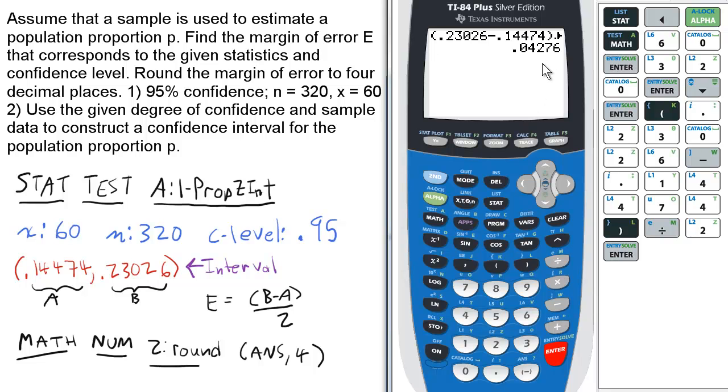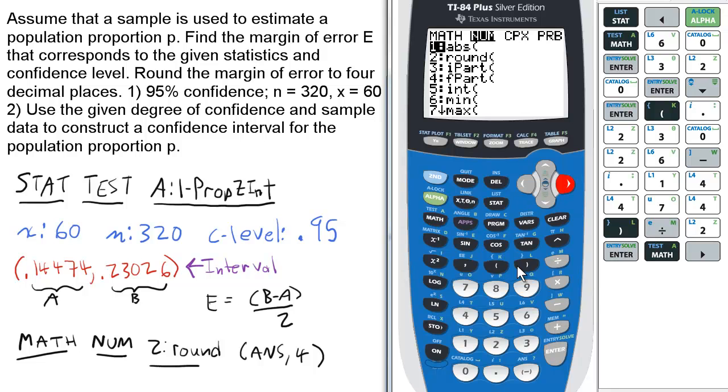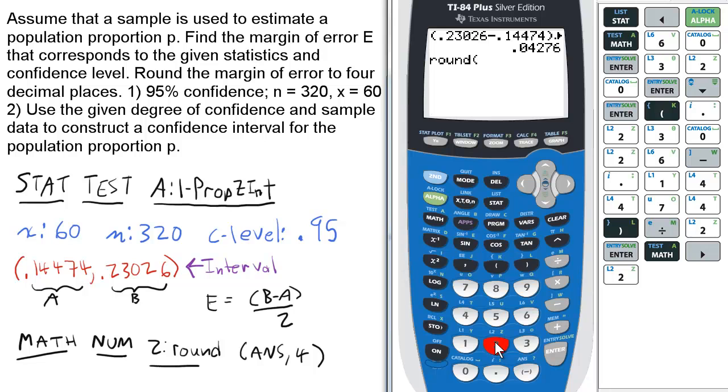That's your error value for the one-prop Z interval question. To round it to 4 decimal places, press MATH, select NUM, select 2 for round. We want to round the answer we just had, 0.04276.